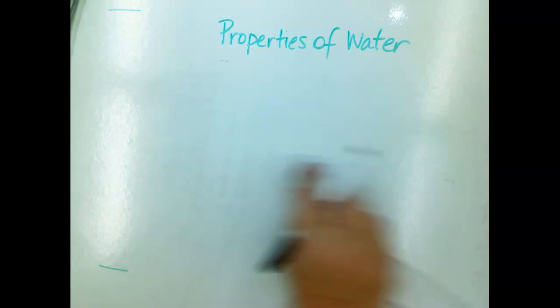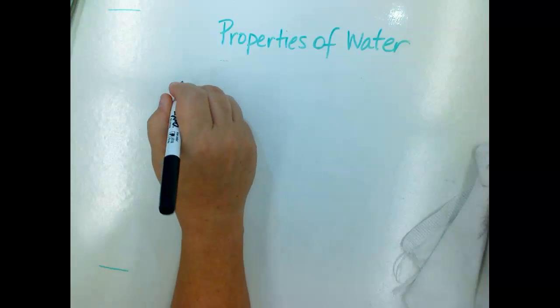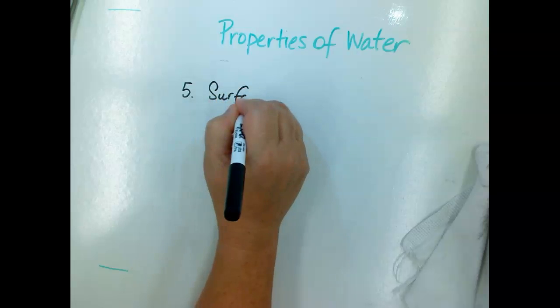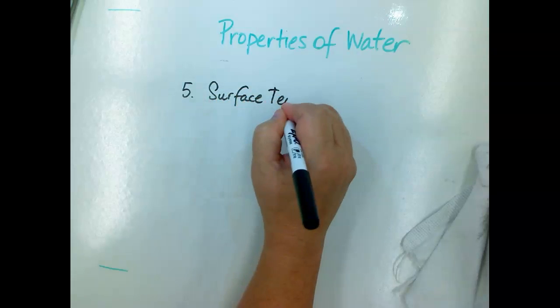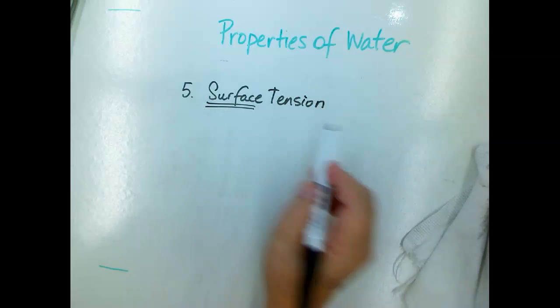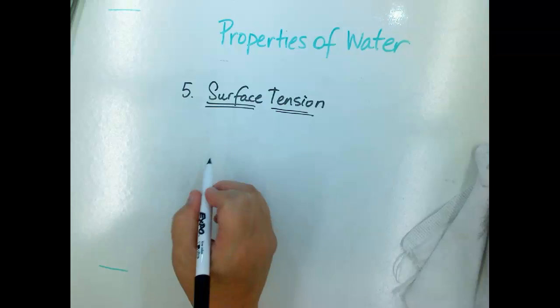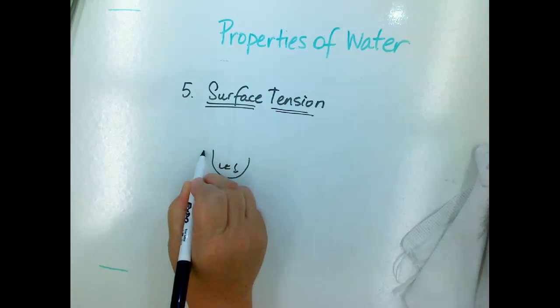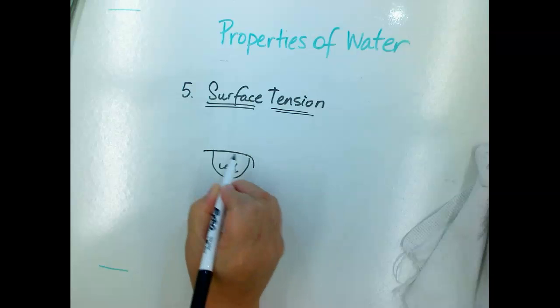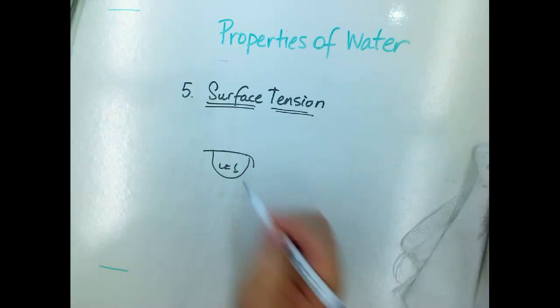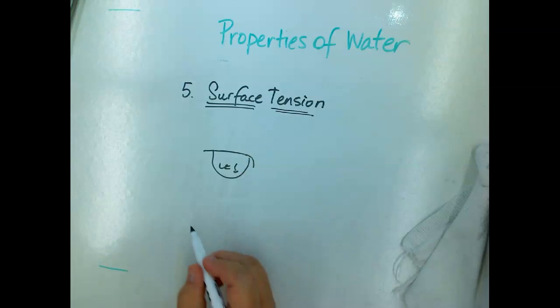The next one is that water has surface tension. Surface just means like at the top and tension means pulled tight. If you think of a bowl of food that you have left over and you put a piece of saran wrap over the top, it's got surface tension, so you can bounce things off of it and things like that. And that's the same as water.